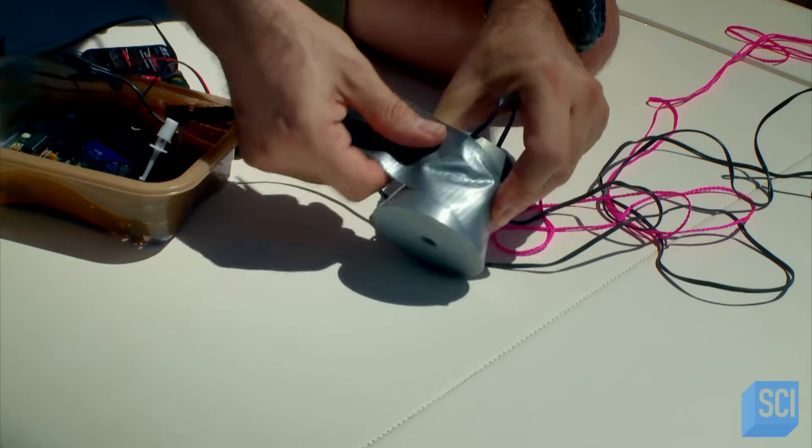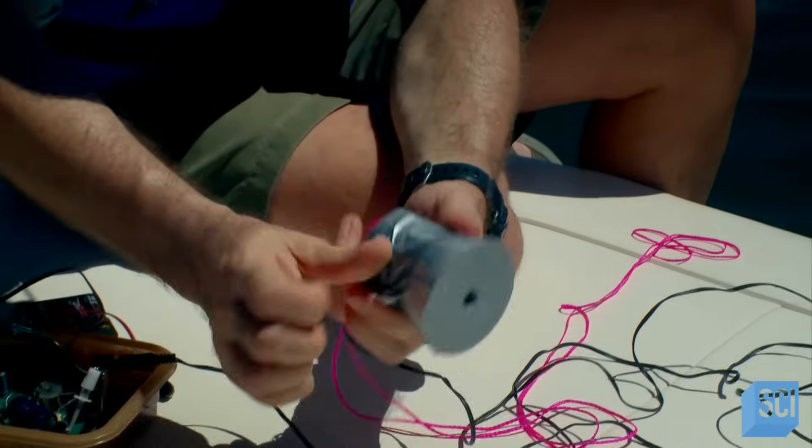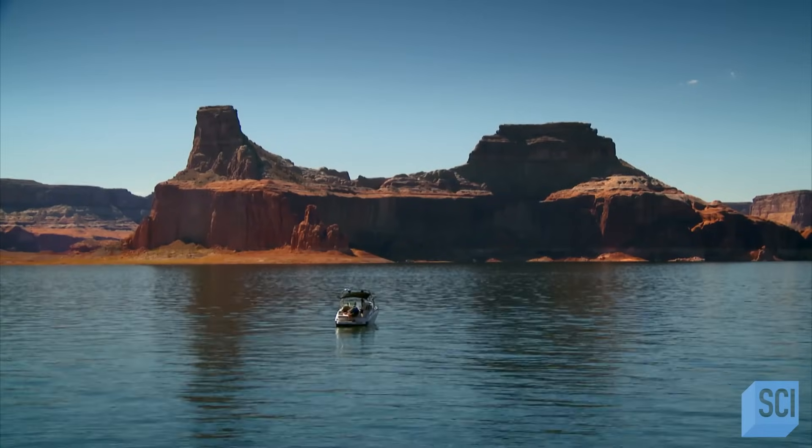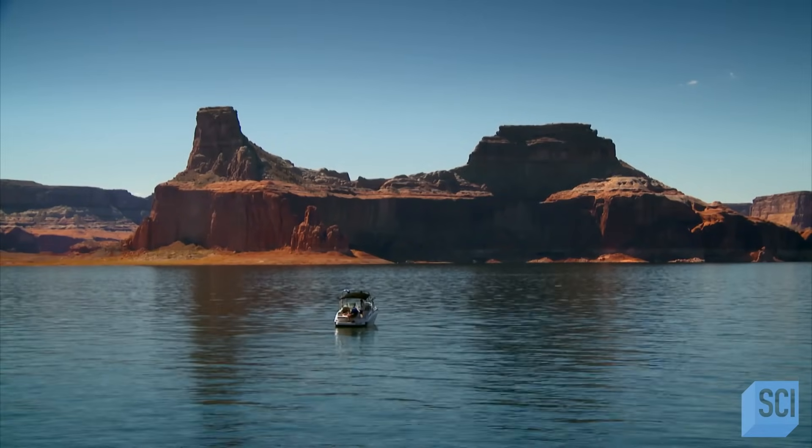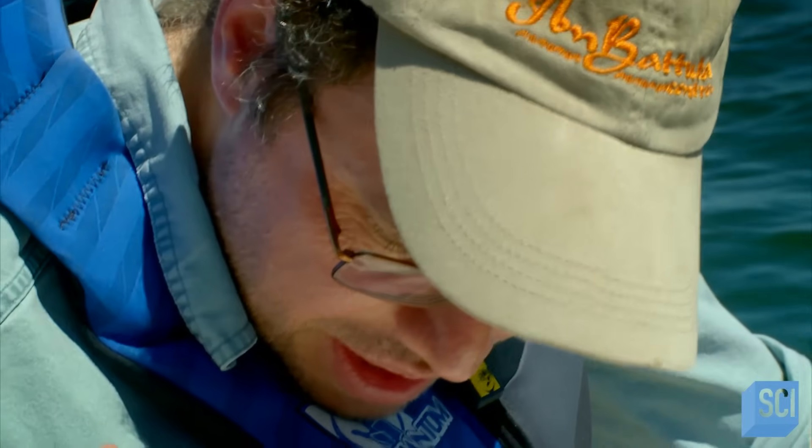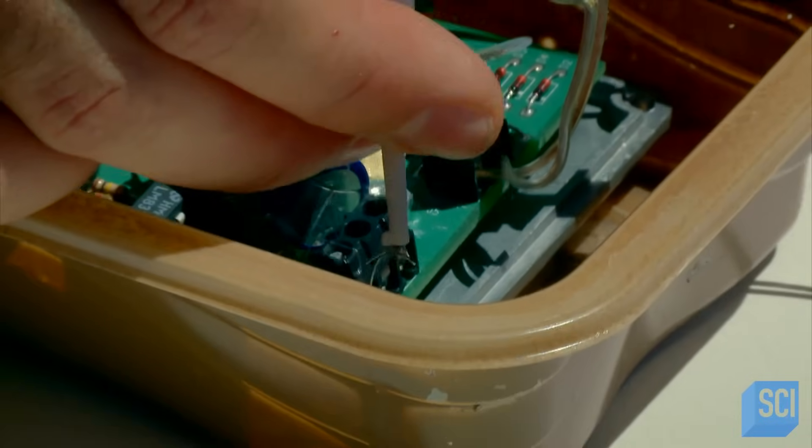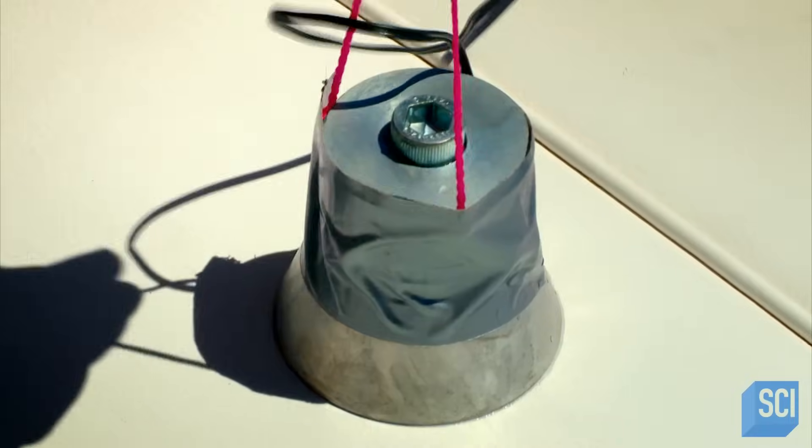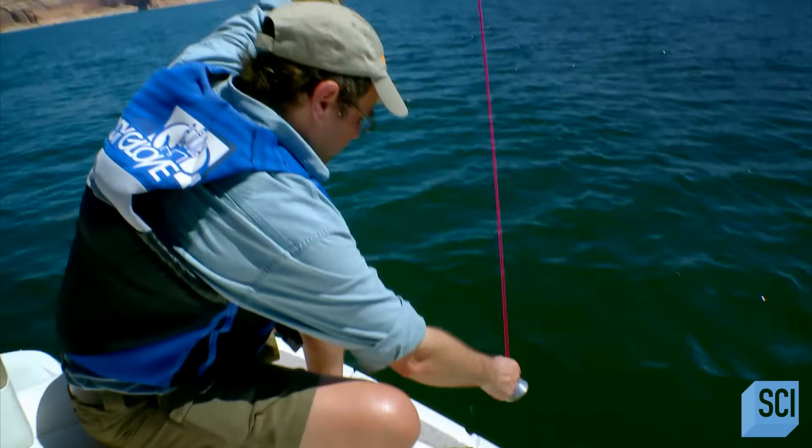Ralph perfects the technology that will travel to Titan. His instruments must be extremely tough, small, and light to survive on board a space probe. The sonar sends out a pulse of sound. And from the time it takes for the echo to come back, we can determine how deep the sea is.